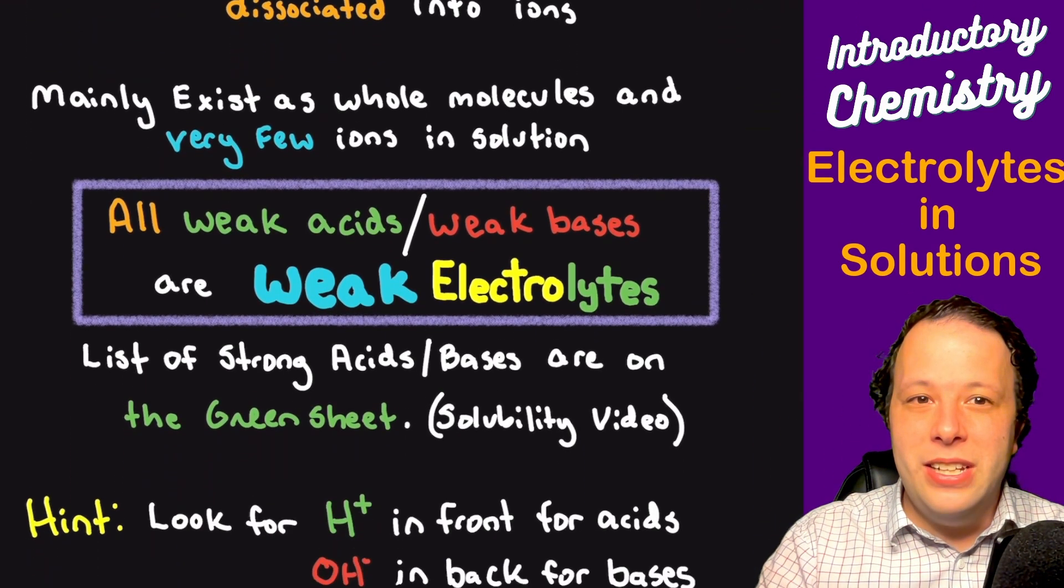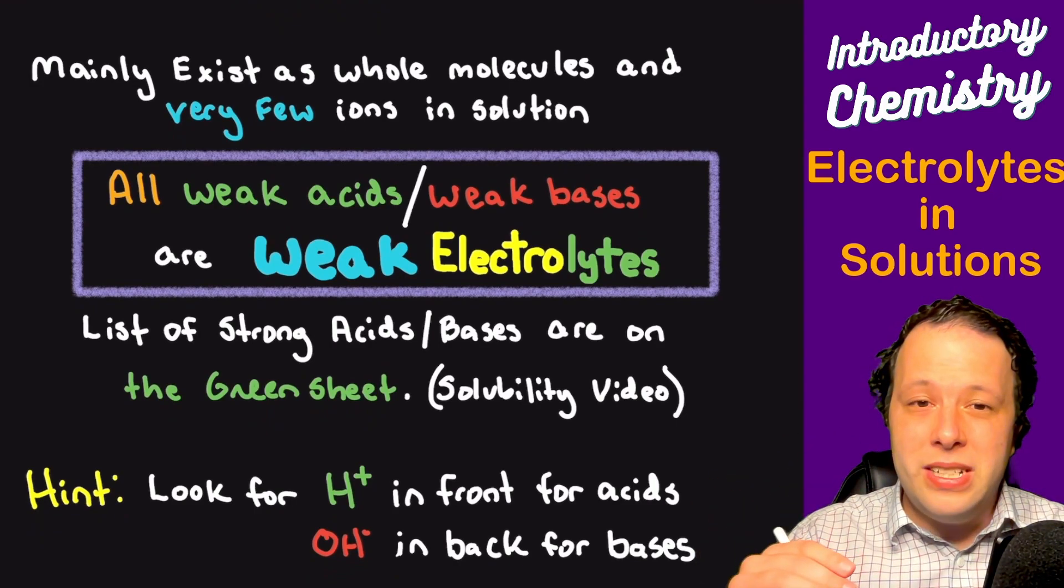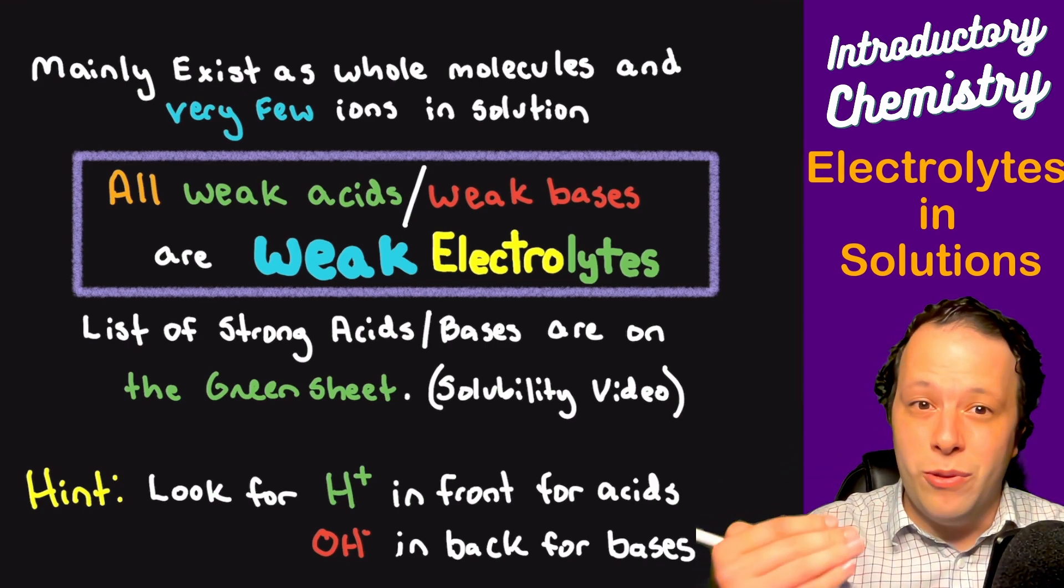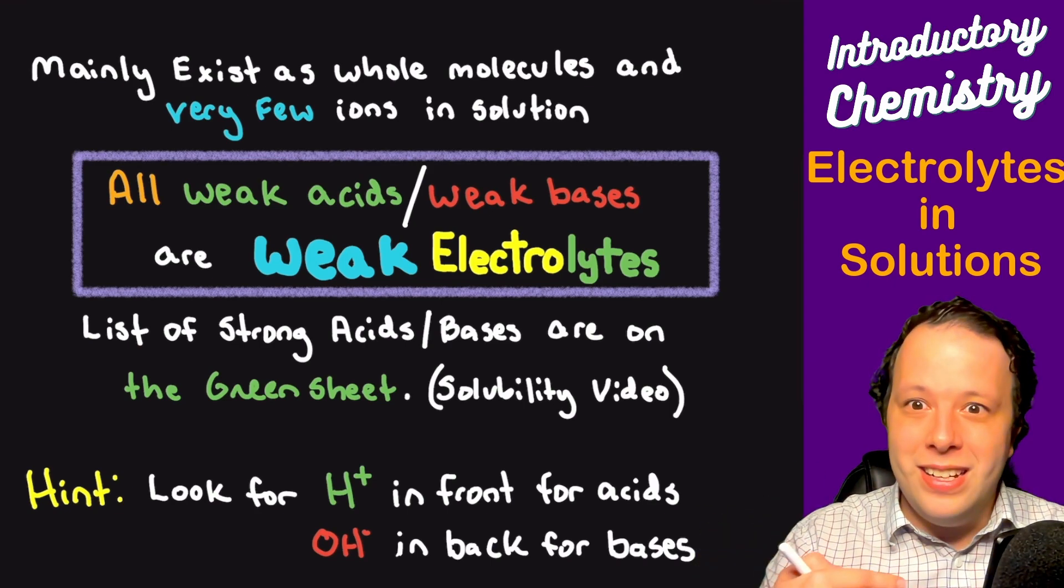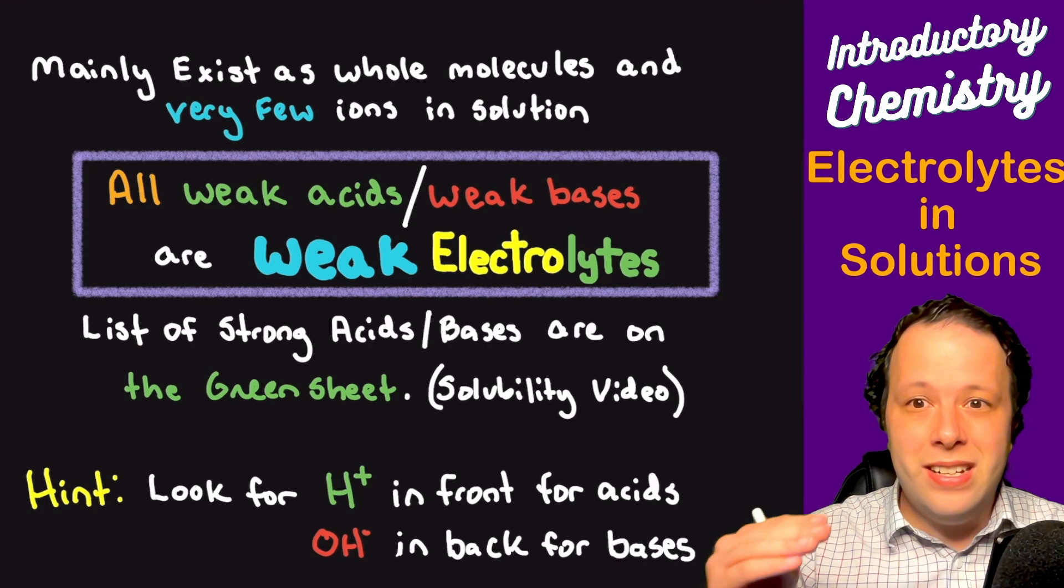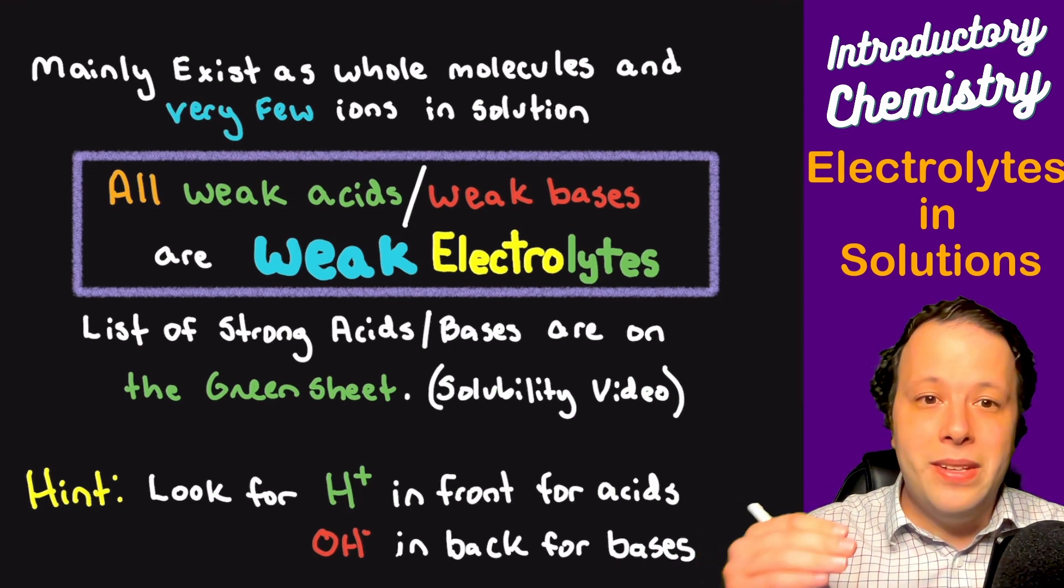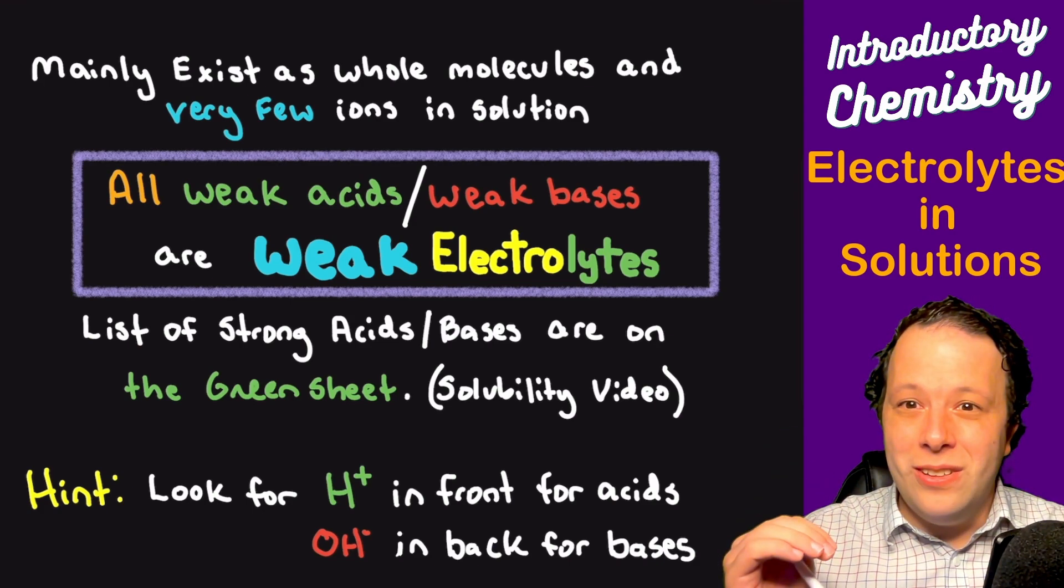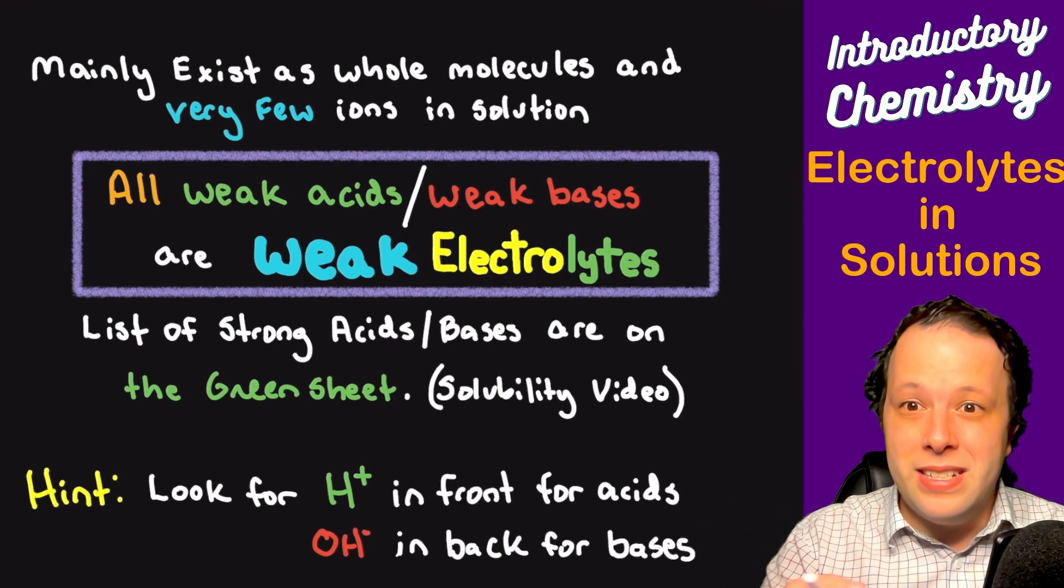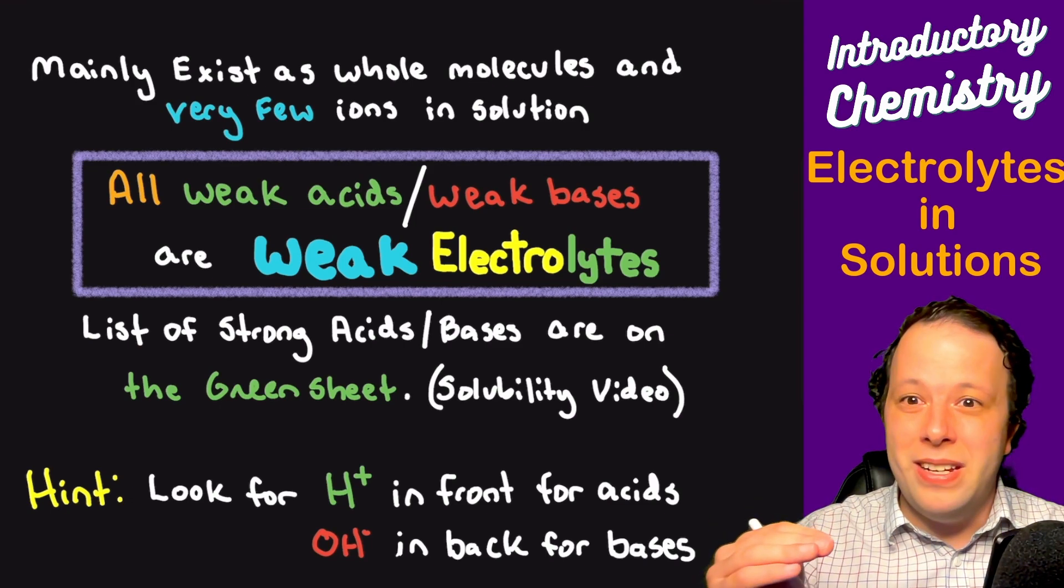So how do you exactly know when it's a weak acid versus a weak base? Well for you guys, there is a list of strong acids and bases that you can find on the green sheet. And if you're someone that's watching this video that's not in my course, then there is a video on this sheet, it's called the green sheet, it's our solubility video, take a look at it so you can find out more. So if you are looking at this thing, there is a list of strong acids and strong bases. Find it for yourself so that you can take a look at it. In fact, it's something that you have seen before.